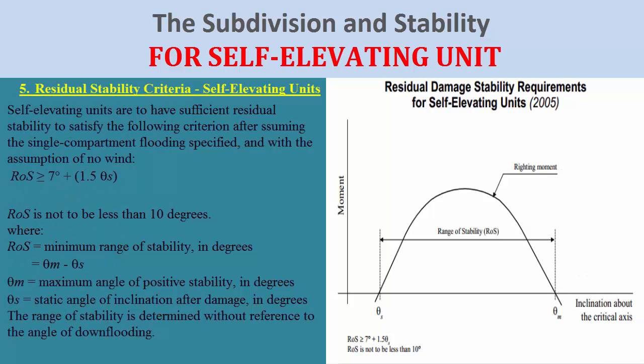Five: residual stability criteria for self-elevating units. Self-elevating units are to have sufficient residual stability to satisfy the following criterion after assuming the single compartment flooding specified and with the assumption of no wind: Ros,min equals 7 degrees plus 1.5 × Qs. Ros,min is not to be less than 10 degrees, where Ros,min equals minimum range of stability in degrees, Qs equals Qm, and Qm equals maximum angle of positive stability in degrees. The range of stability is determined without reference to the angle of downflooding.